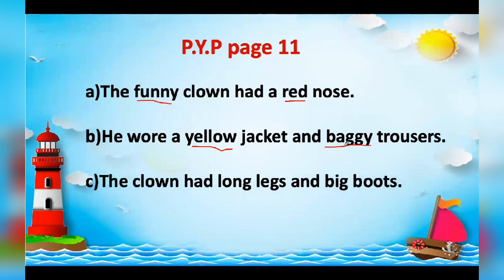Number three: 'The clown had long legs and big boots.' The word 'long' describes what kind of legs he had — he had long legs — so 'long' is an adjective. And 'big boots' — the word 'big' describes what kind of boots they were — they were big — so 'big' is also an adjective.